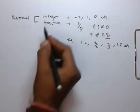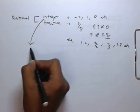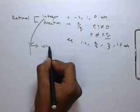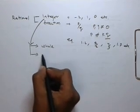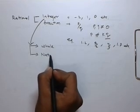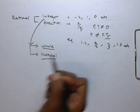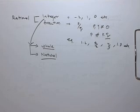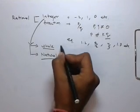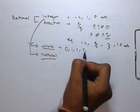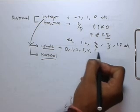Now the integers. Integers can be classified into whole numbers and natural numbers. Whole numbers are all those numbers which are non-negative, like 0, 1, 2, 3, 4, 5, etc.